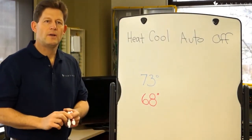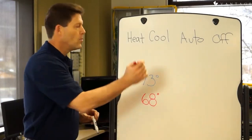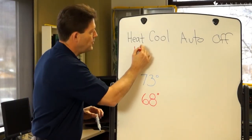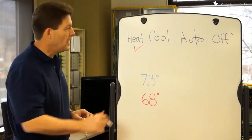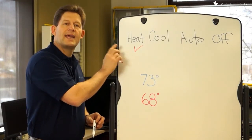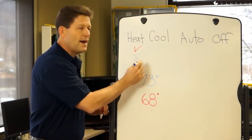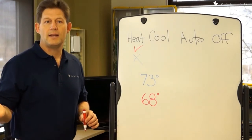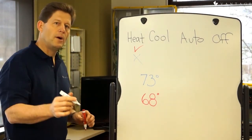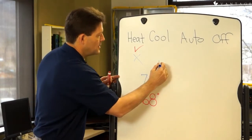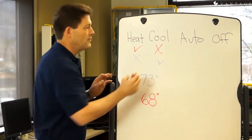The heat mode allows the thermostat to signal a need for heat when the heat set point is reached, but the thermostat cannot call for cooling no matter what the set point may be or how warm it may get. The cool mode allows the thermostat to call for cool, but not to call for heat.